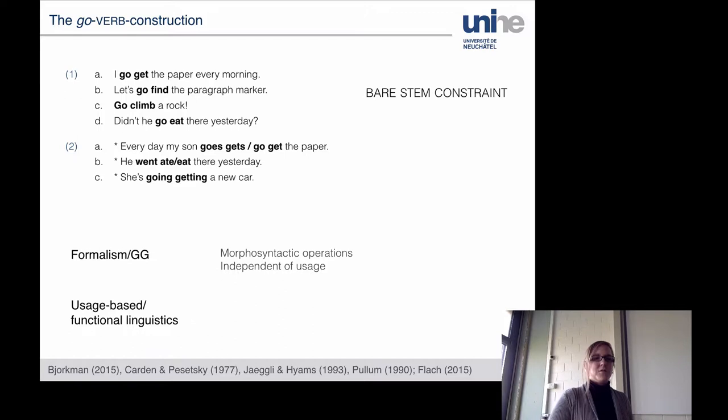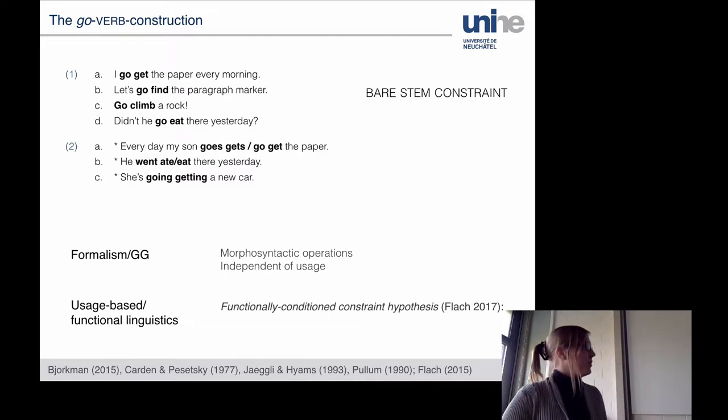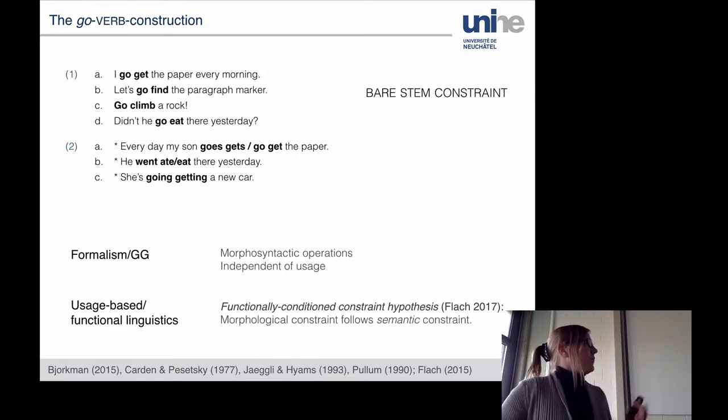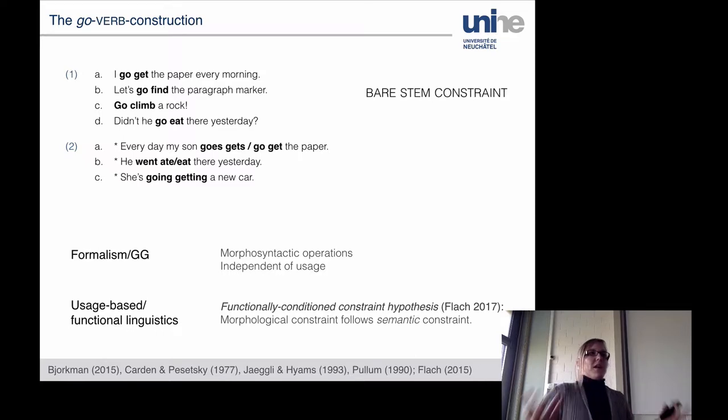From a usage-based, a functional perspective, there have been discussions but they focus on different aspects of the construction. So usage-based linguistics has sort of shied away from this formal constraint, which is basically what I approached in my dissertation. And I propose that it is a functionally conditioned constraint because not only is the construction subject to a morphological constraint, it's also subject to a semantic constraint where the morphological constraint actually follows the semantic constraint because of English morphology. So I'll go into that a bit later on.